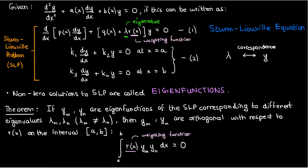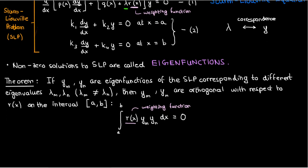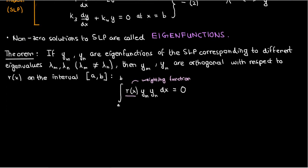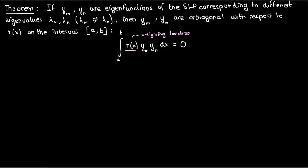Now if you want to stick around, I'm going to start proving it, and I'll show you some special cases when you don't even need the boundary conditions — you'll still get orthogonality. Let's start with our differential equation. Since y_m and y_n are solutions — because they're both eigenfunctions of the Sturm-Liouville problem — the following relations hold true.